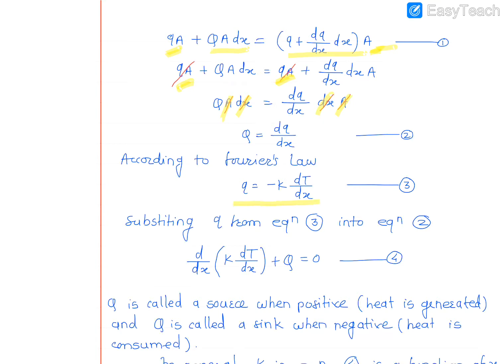Therefore, substituting from equation 3 into equation 2, we have d/dx(K·dT/dx) + Q = 0. This is the governing equation for one-dimensional steady-state heat conduction in a single direction.